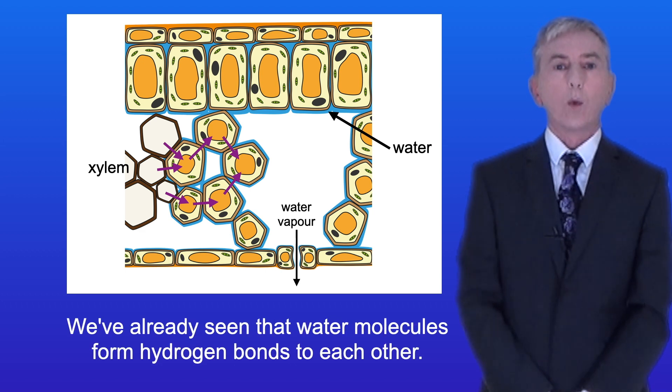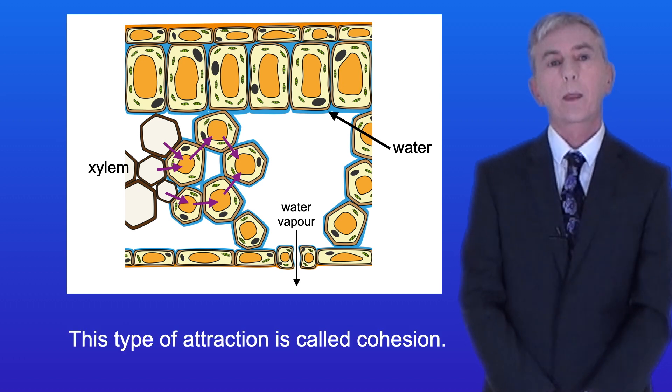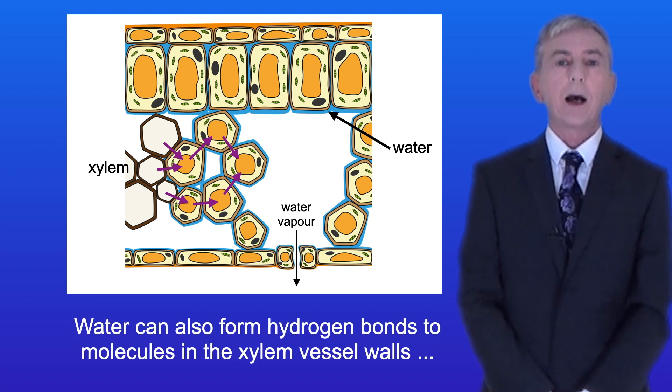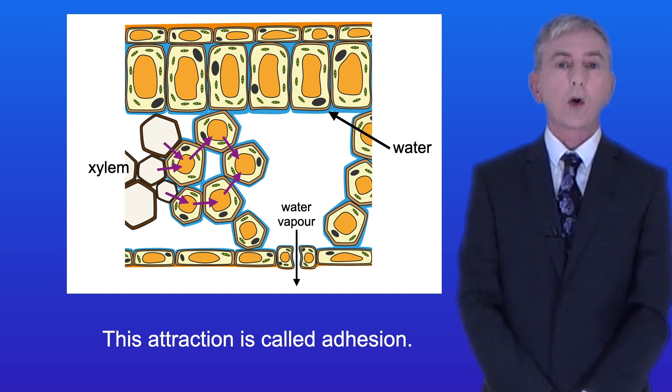Now we've already seen that water molecules form hydrogen bonds to each other. This type of attraction is called cohesion. Water can also form hydrogen bonds to molecules in the xylem vessel walls, for example carbohydrates, and this attraction is called adhesion.